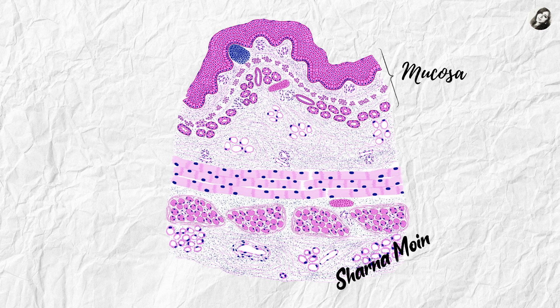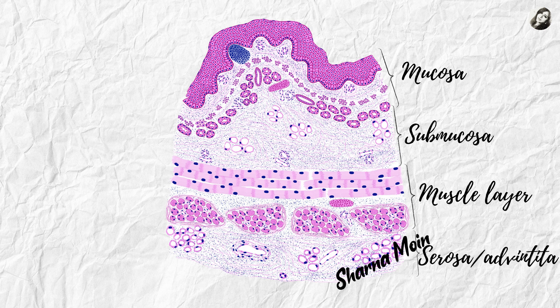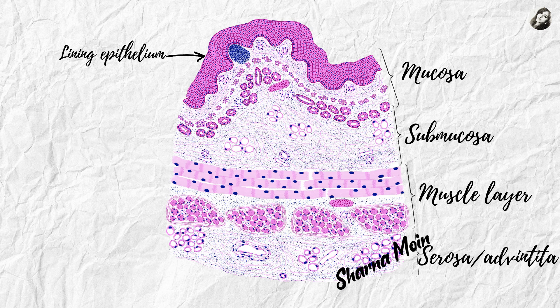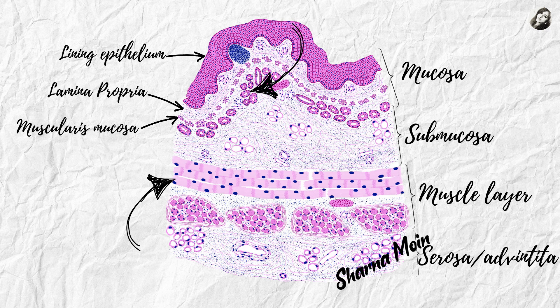The layers of the esophagus are the mucosa, the submucosa, the muscle layer, and the serosa. The mucosa itself has the lining epithelium, the lamina propria, and the muscularis mucosa. The esophagus also has esophageal glands, as well as muscles, connective tissue, and vessels.